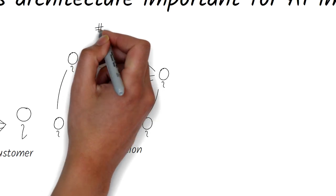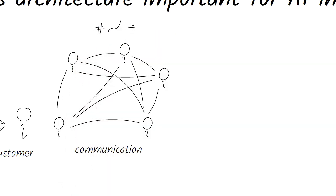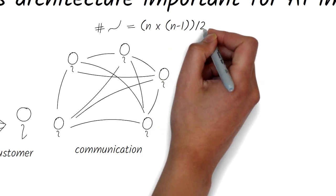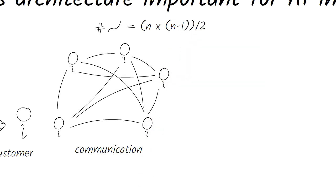If you care, the number of one-to-one connections for an n-person company is computed by this formula: n times n minus one by two. For a 10,000-person company, that's close to 50 million lines of communication.